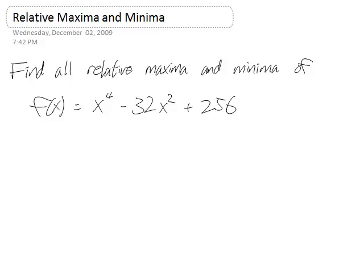So here we want to find all the relative maxima and minima of this function, x to the fourth minus 32x squared plus 256.